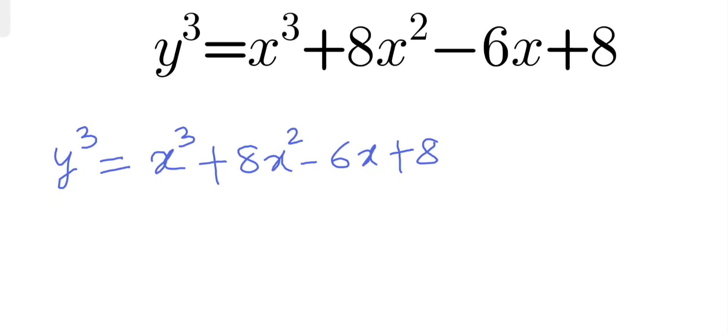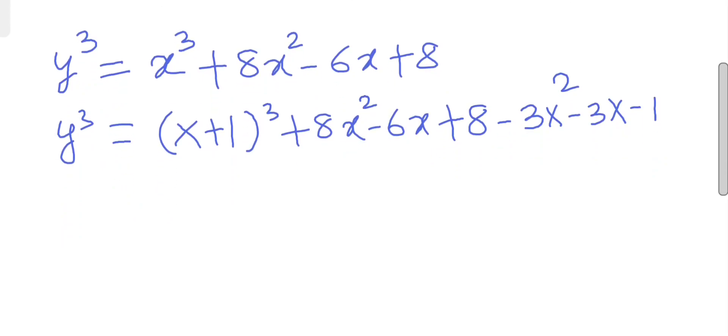Now we'll try to simplify this as (x+1)³ plus 8x² minus 6x plus 8. Because I'm writing (x+1)³, I have to subtract some terms in order to balance. So I'll subtract 3x² minus 3x minus 1.